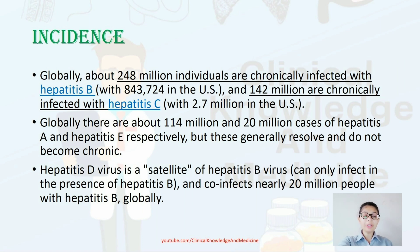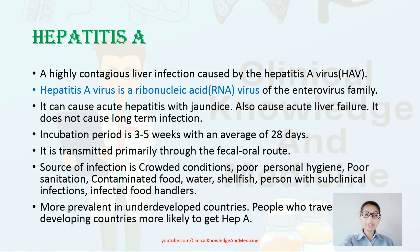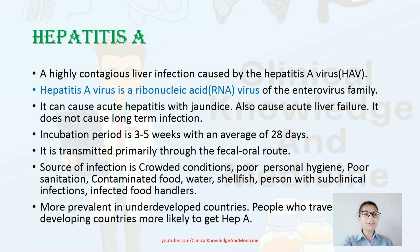Hepatitis A is a highly contagious liver infection caused by the hepatitis A virus, which is an RNA virus of the family Picornaviridae (Enterovirus). It can cause acute hepatitis and acute liver failure, and does not cause long-term infection. The incubation period is 3 to 5 weeks with an average of 28 days. Transmission is through the feco-oral route.